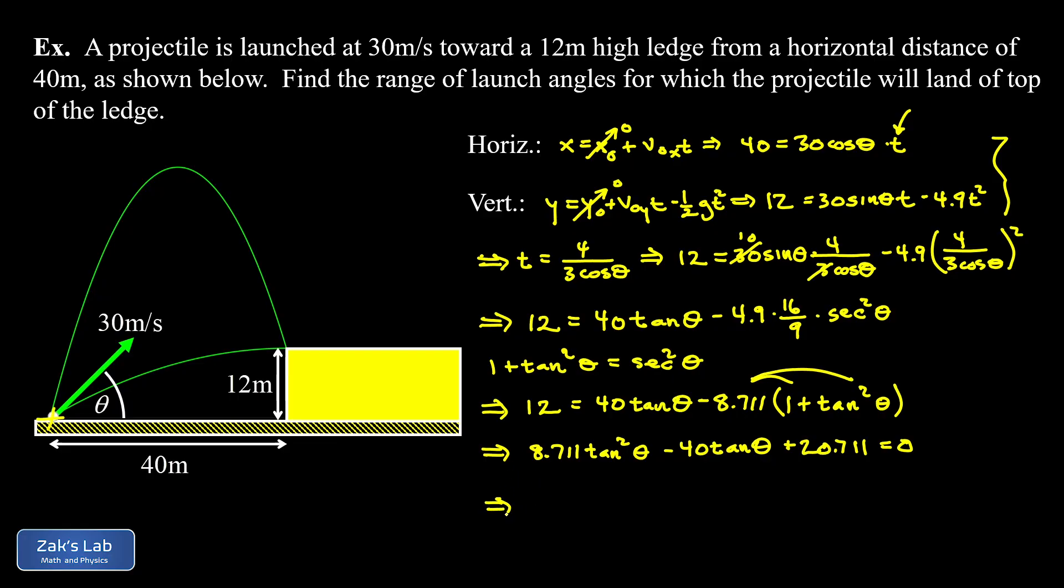This means tan(θ) is the negative of our linear coefficient. That's going to be 40 ± √(40² - 4(8.711)(20.711)). That whole thing has to be divided by twice the coefficient of the quadratic term. So we're dividing by 2(8.711).